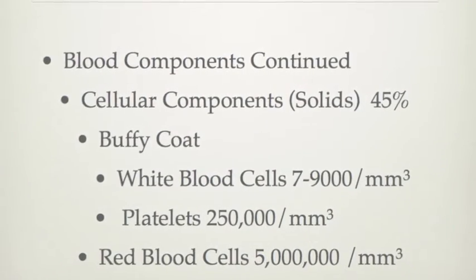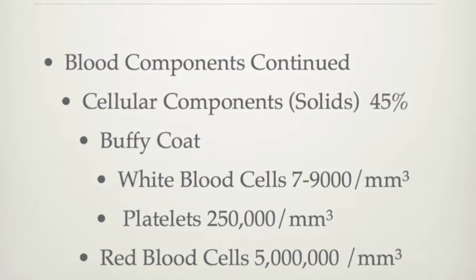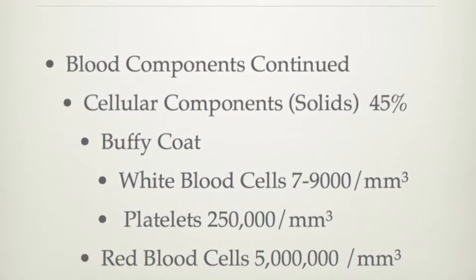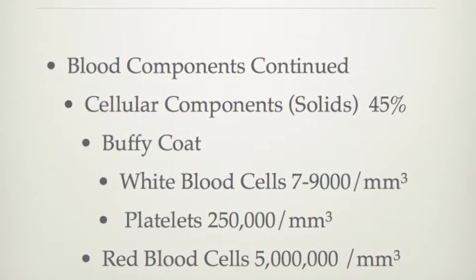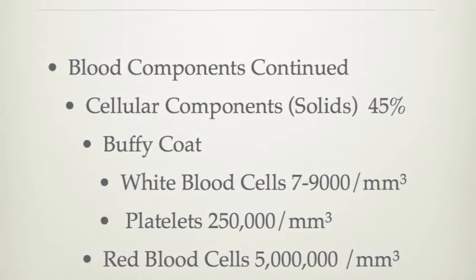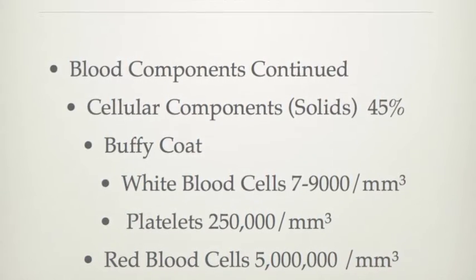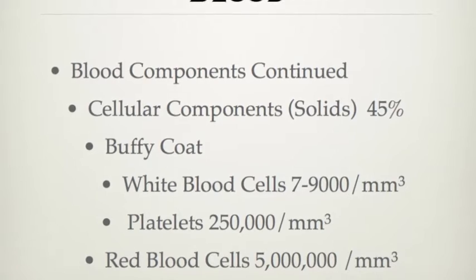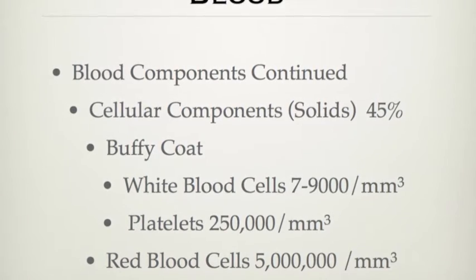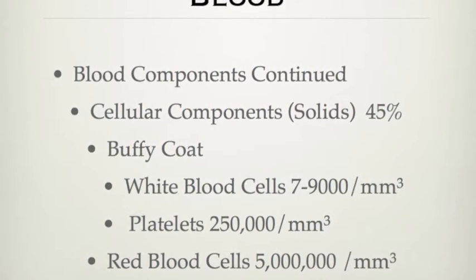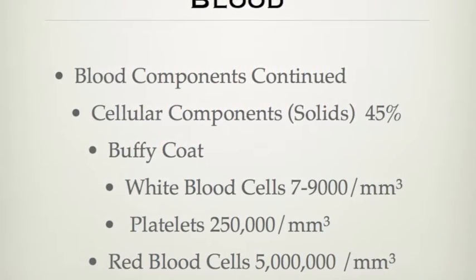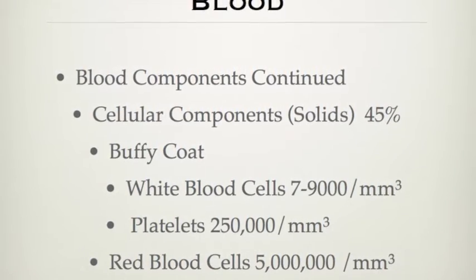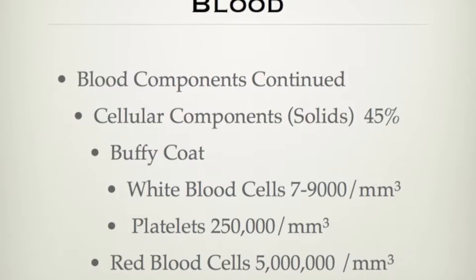The second part of the blood is the solid part — 45% is considered solid. The Buffy coat consists of the white blood cells and the platelets, while the red blood cells make up the remainder of the solid component.